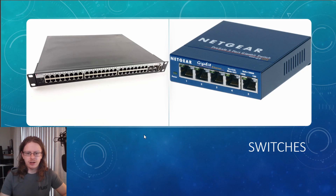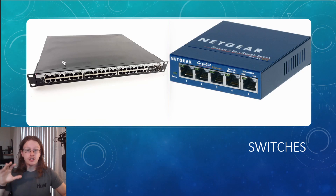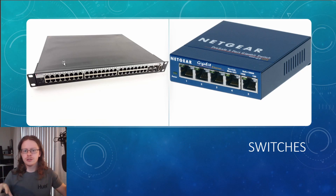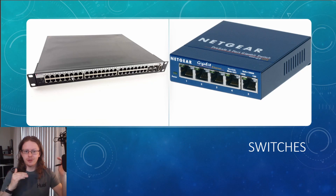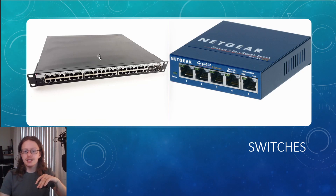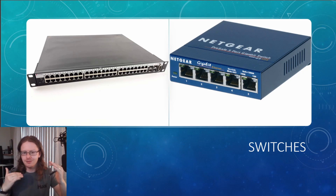Depending on where you are, switches come in various flavors. The rack-mounted switch on the left is what you'd see in a larger infrastructure — these are usually very configurable, so you can set up rules to allow certain computers to talk to others. You can also set up VLANs — virtual LANs — effectively the equivalent of having two separate switches. Say you've got accounting on one floor and IT on another and you don't want their computers talking to each other. If those two computers want to communicate, the switch sends it to the router, and the router decides whether to allow it.